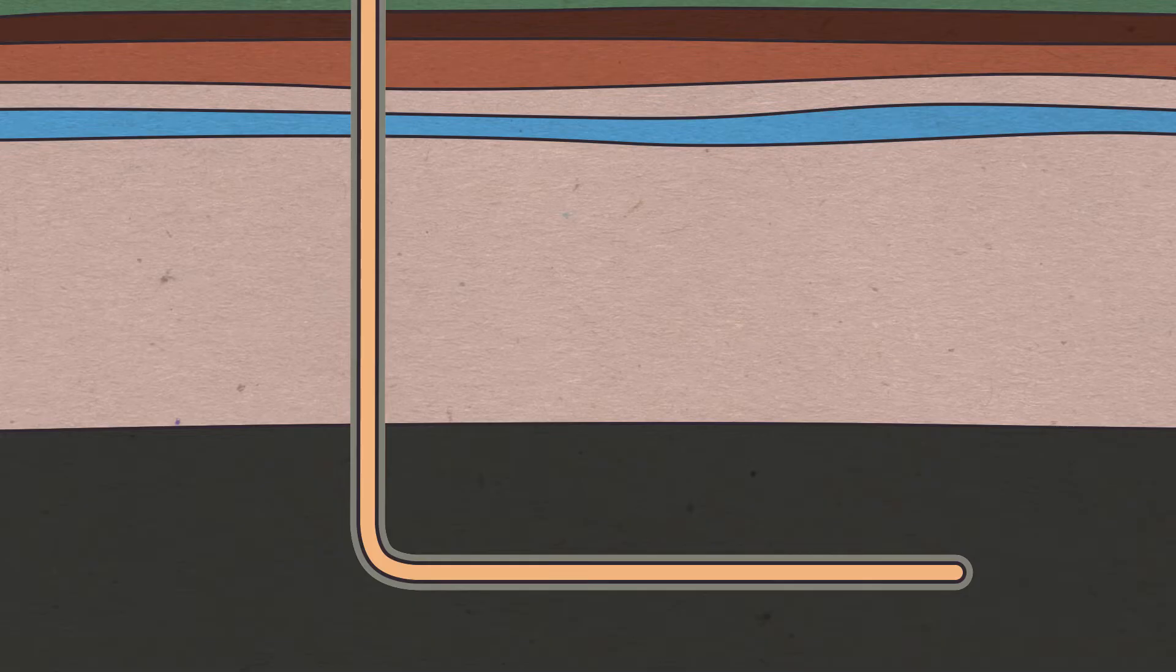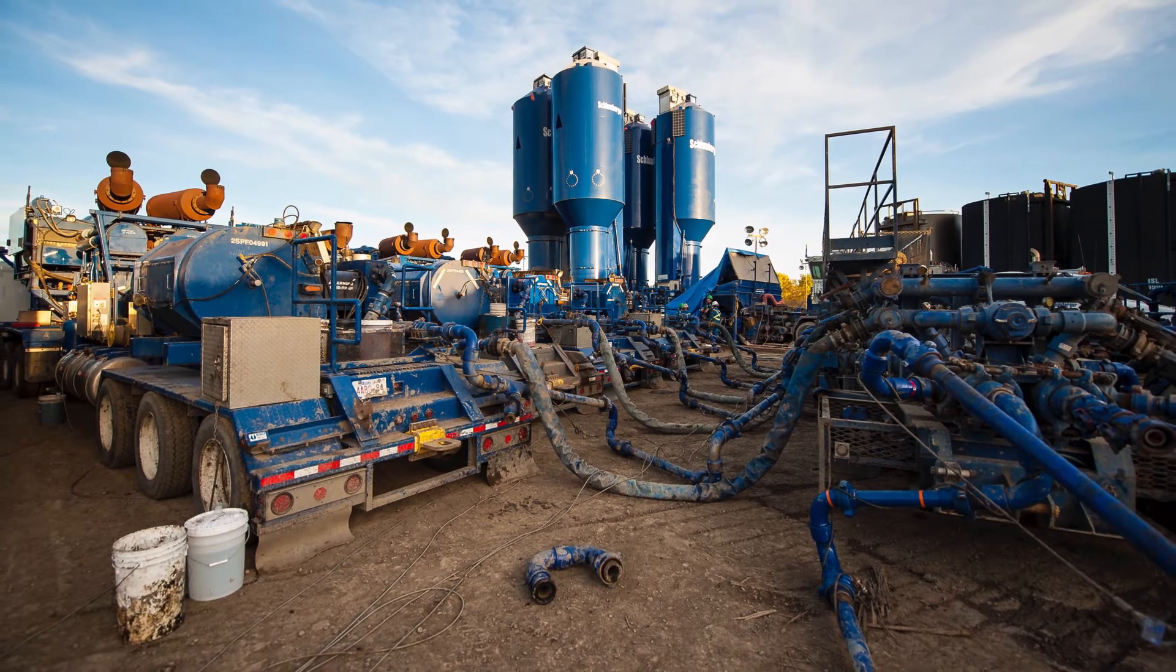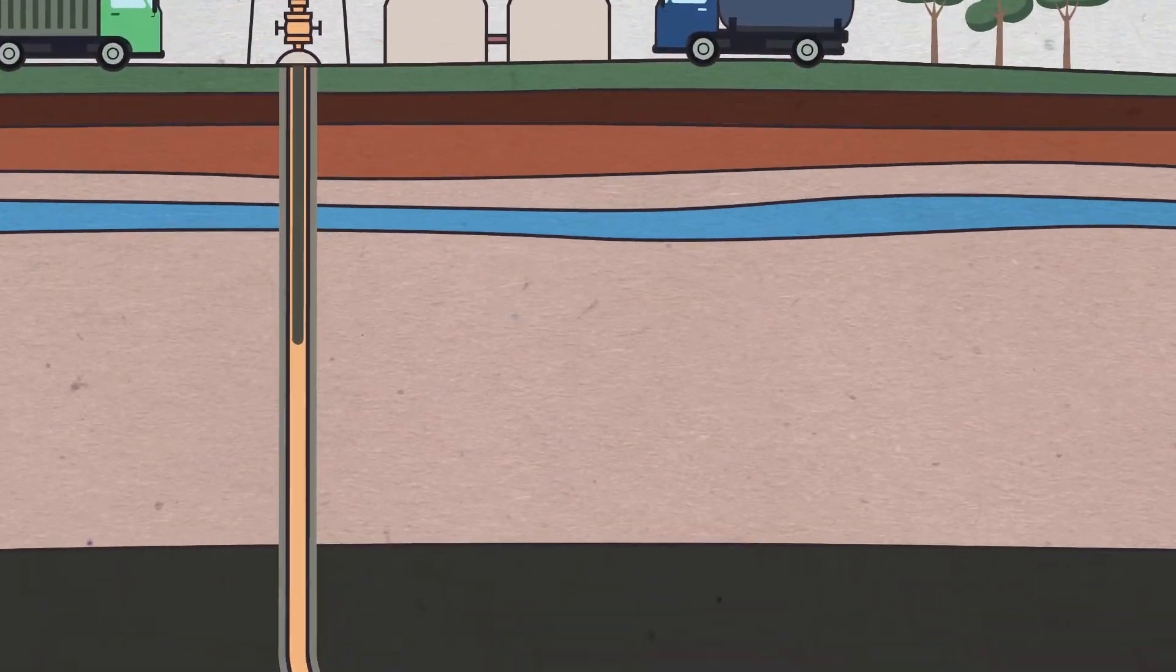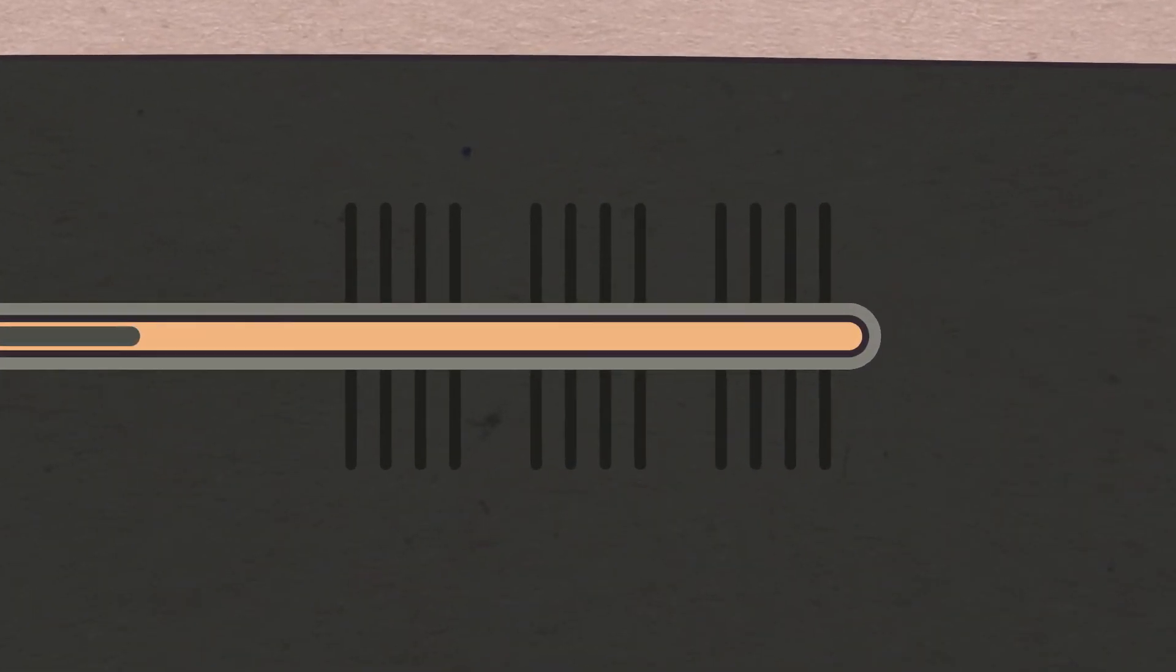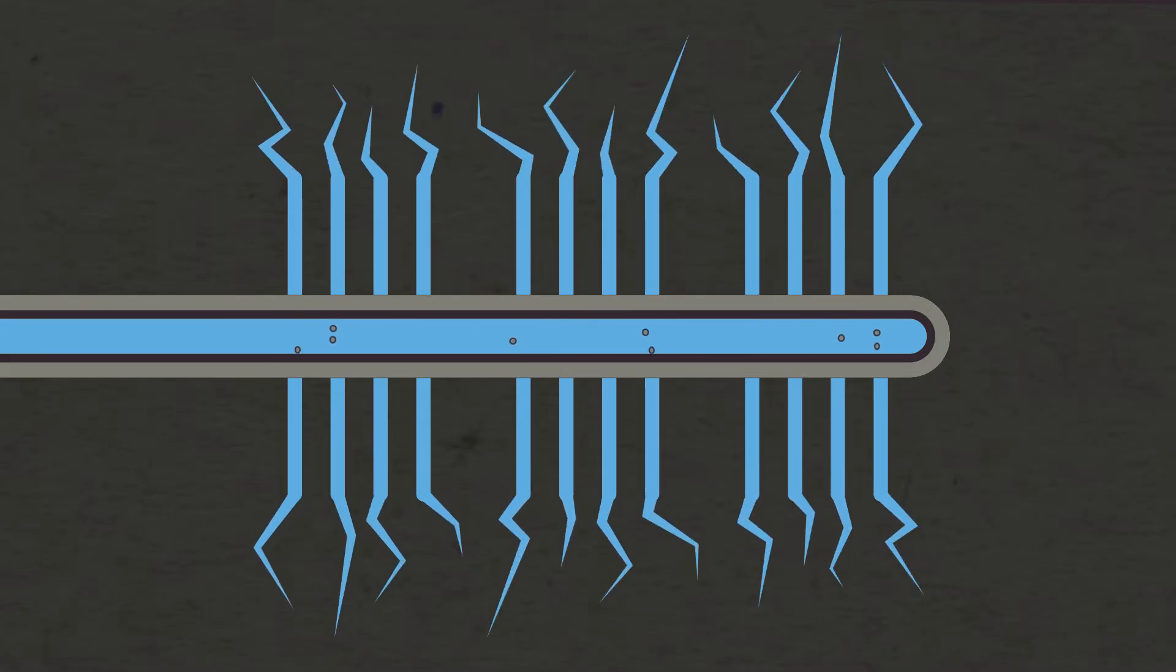Once the well is drilled, the fracking process then begins. A fleet of trucks with high-pressure pumps, known as a frack spread, are brought out to the well. Explosives are then run down into the horizontal section of the wellbore and used to perforate the oil-producing zones. Chemicals, water, and sand are then pumped into the fissures to open them up so that oil and gas can flow through from the reservoir to the wellbore.